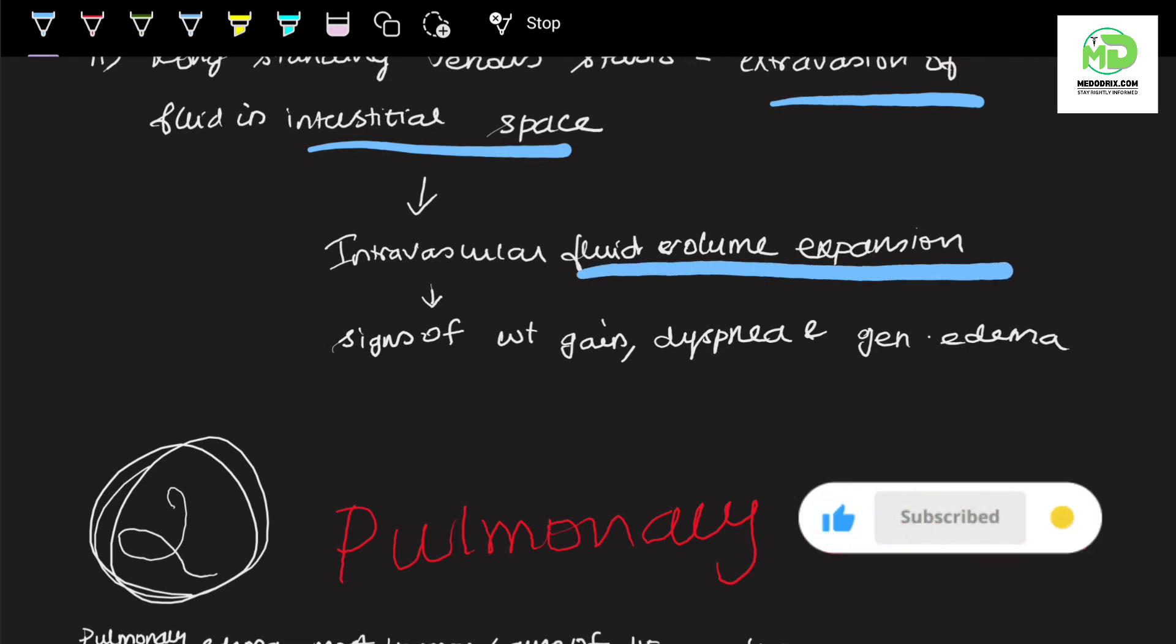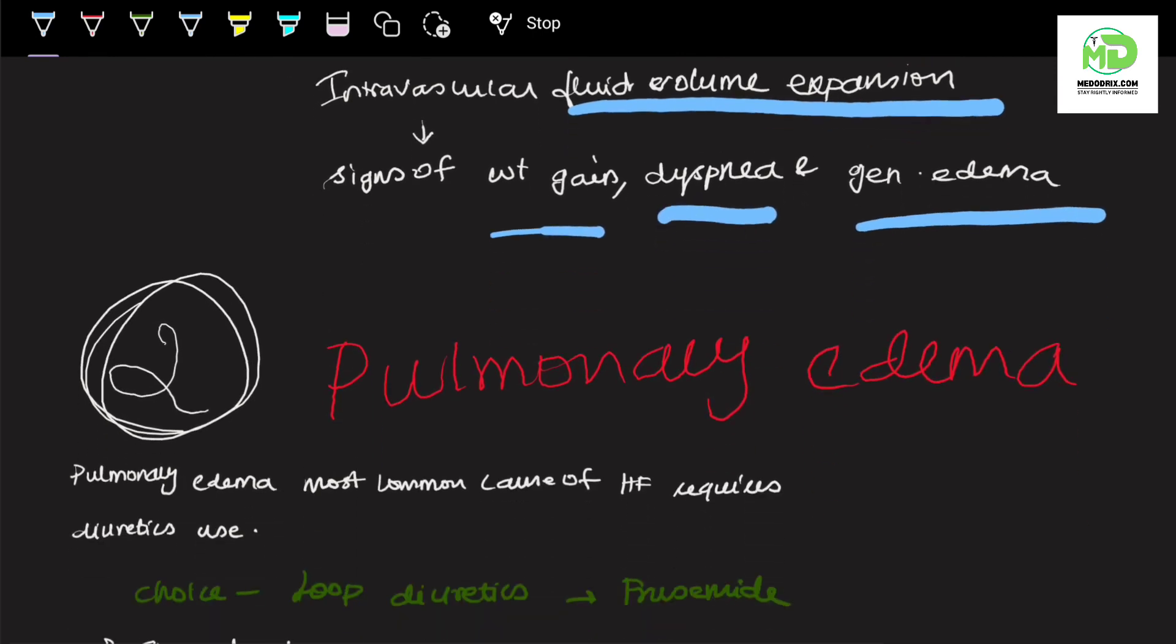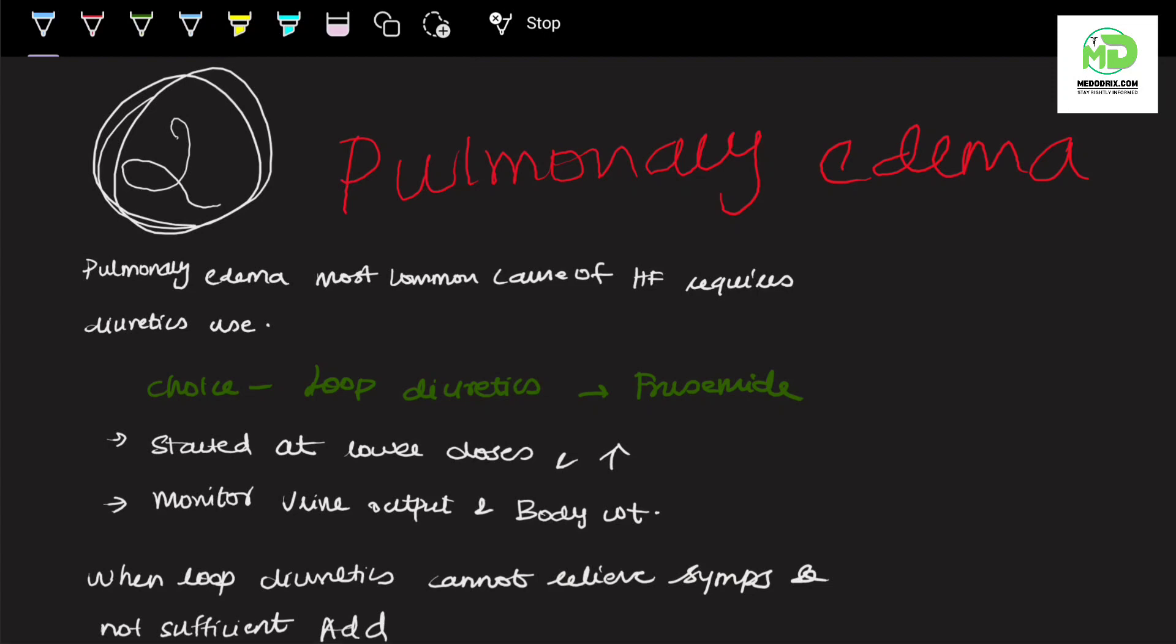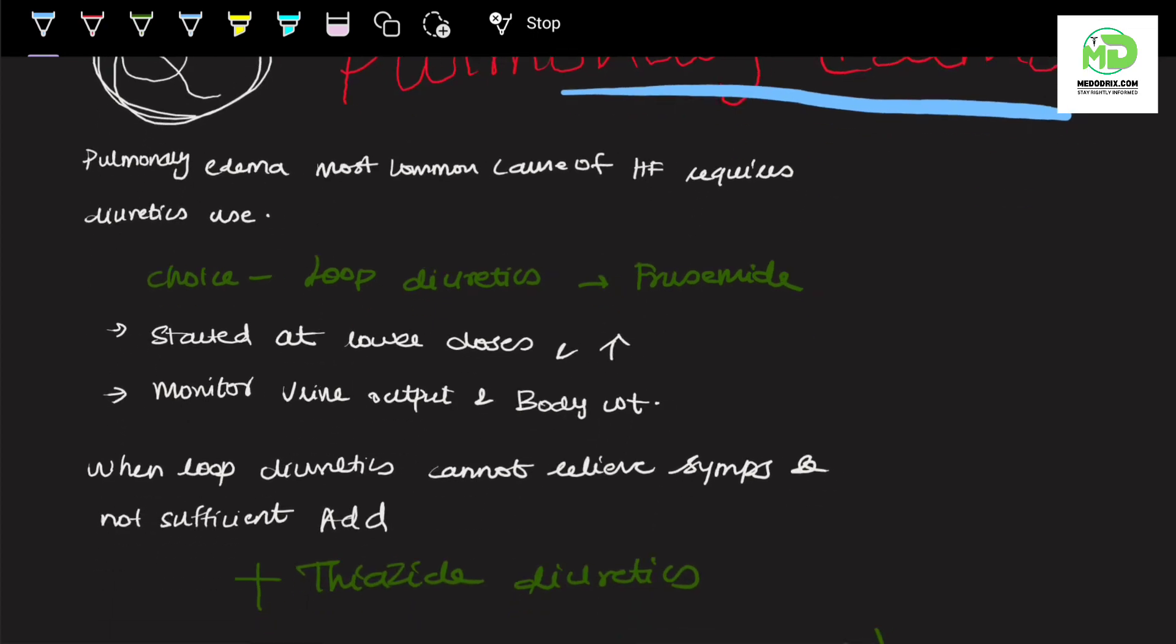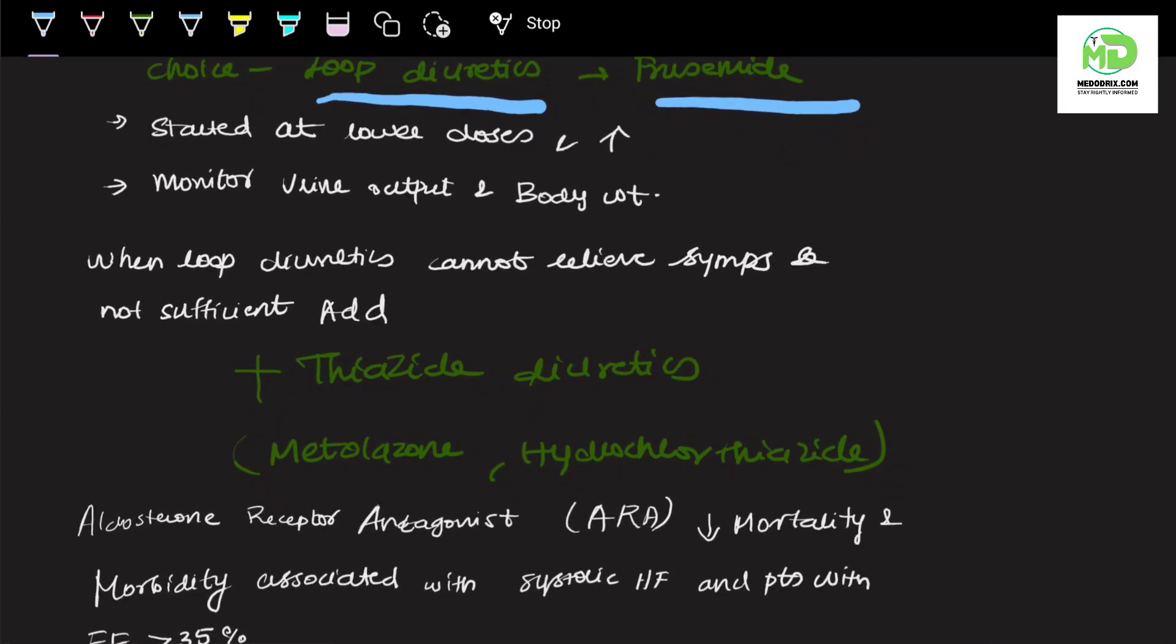The second condition is pulmonary edema, where the most common cause is heart failure requiring diuretics use. The first-line choice is loop diuretic, example furosemide. We start at the lowest dose and titrate upwards, monitoring urine output and body weight while the patient is treated.